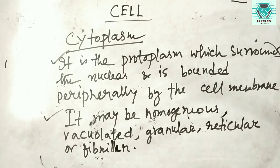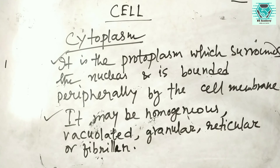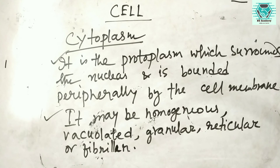The cytoplasm is the protoplasm that surrounds the nucleus and is bounded peripherally by the cell membrane. It may be homogeneous, vacuolated, granular, reticular, or fibrillar depending on the type of cell. Cytoplasm is also capable of performing different kinds of work directed by the nucleus.